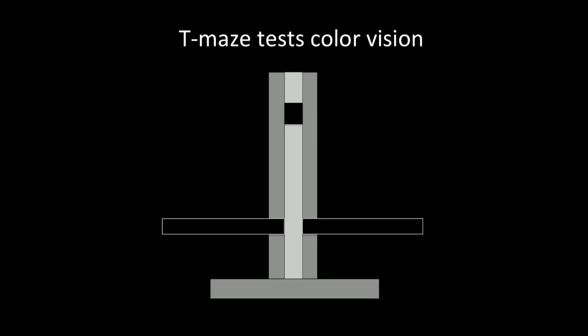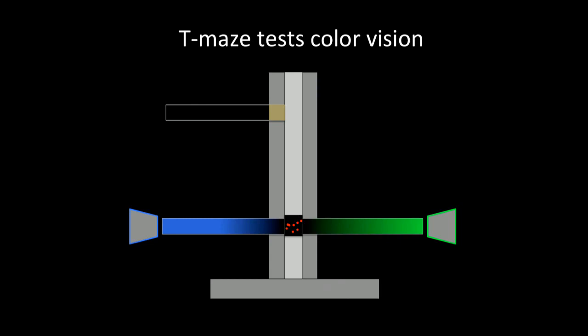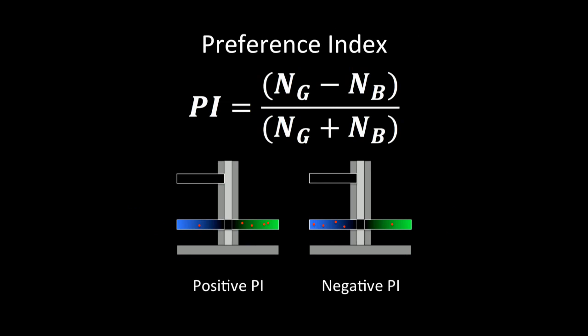So to assay for color vision, we use a T-Maze apparatus. Essentially we have a blue and green light at the end of two blackened tubes. We insert a tube of flies into an elevator that is lowered, and they're allowed to make their decision, and after 20 seconds we close off the tubes and count the flies.